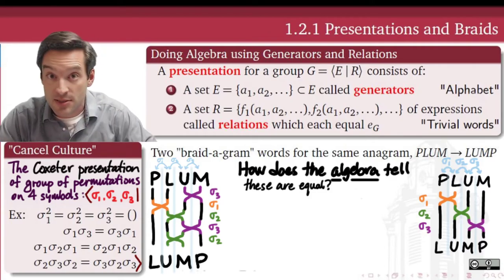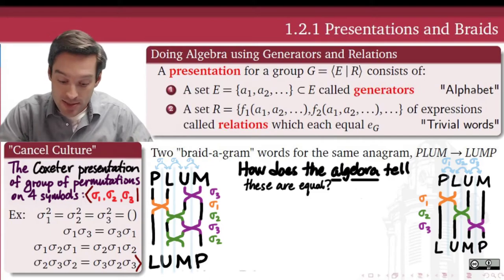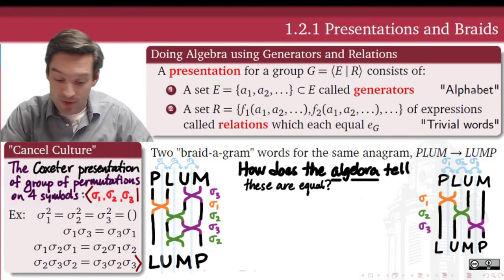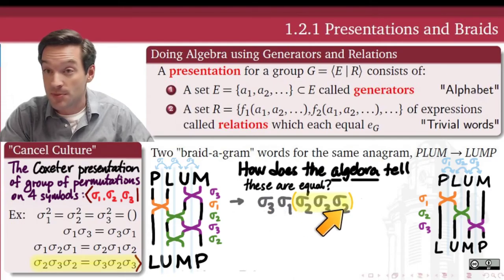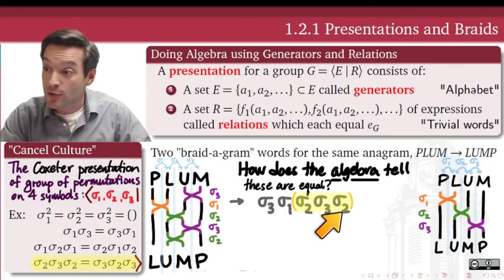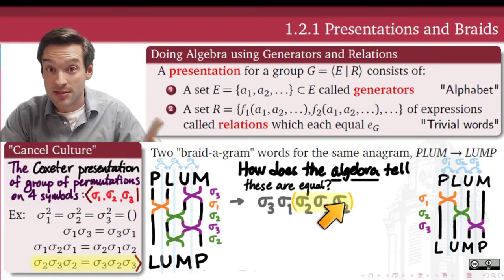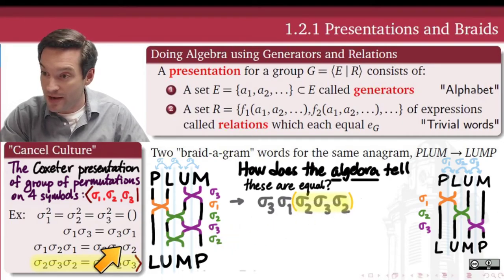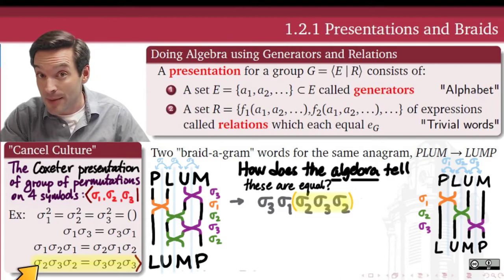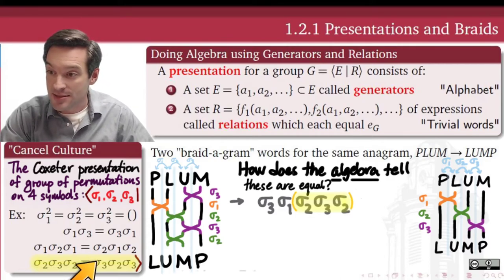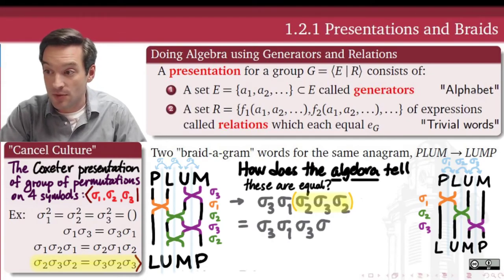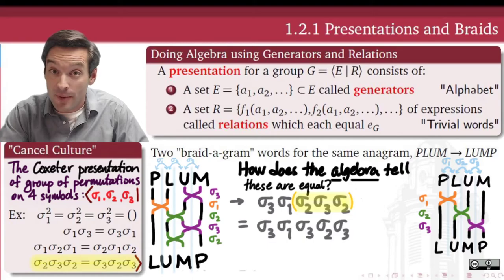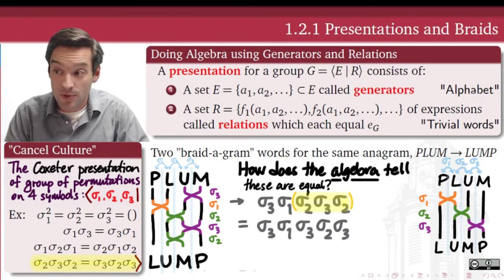Now let's use these relations to show that the two braidograms represent the same permutation. Start with the more complicated word: sigma three, sigma one, sigma two, sigma three, sigma two. Using associativity, group together the last three factors: sigma two, sigma three, sigma two. This is one side of a skein relation — sigma two, sigma three, sigma two equals sigma three, sigma two, sigma three — so we substitute sigma three, sigma two, sigma three in its place.